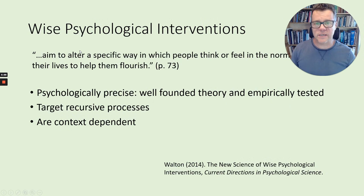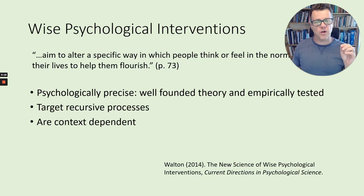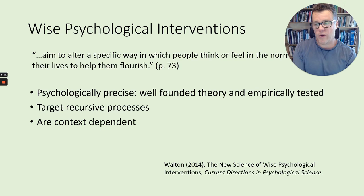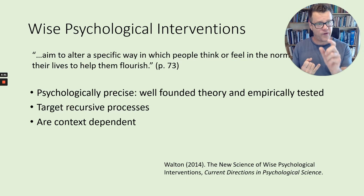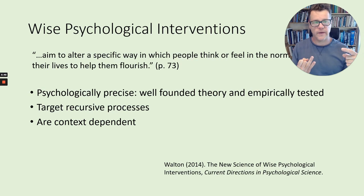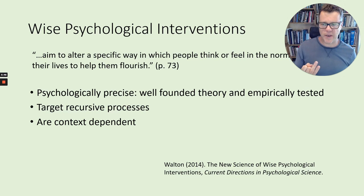I want to talk about a theory by Walton called wise psychological interventions — how can we create psychological interventions that work? The aim is to alter the way in which people think, the way in which they perceive the norms that operate in our society, and to help them lead better and healthier lives. Here are three features of these wise psychological interventions. First, they're psychologically precise — founded on psychological theory that's been verified and tested in experiments. Second, they target recursive processes — interrupting a process that continues bad behavior. Third, they are context-dependent.